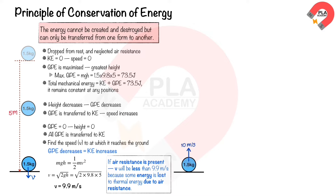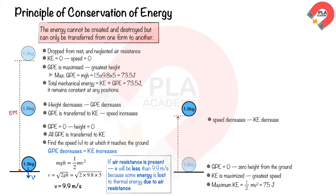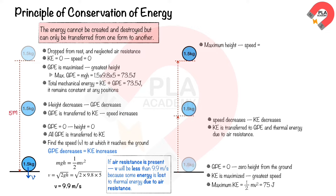In another scenario, the same mass is thrown upward through the air with an initial speed of 10 m/s. At the initial position, the mass has zero gravitational potential energy due to its zero height from the ground, while kinetic energy is maximized. The maximum kinetic energy is ½ × 1.5 × 10² = 75 Joules. As the mass moves upward, its speed decreases, leading to a decrease in kinetic energy, which is transferred to gravitational potential energy and thermal energy due to air resistance. When the mass reaches maximum height, its speed is zero, so its kinetic energy is zero.